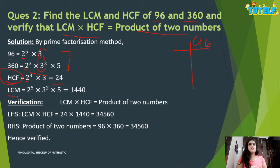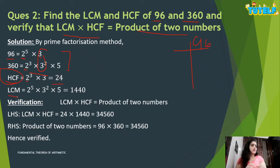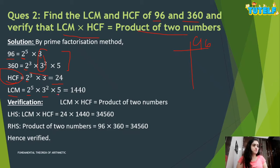For LCM, take all factors with the greatest power. Greatest power of 2 is 2^5, greatest power of 3 is 3^2, and 5^1. Multiplying these gives LCM = 1440. If this question comes for three marks, you get one mark for HCF and one mark for LCM.